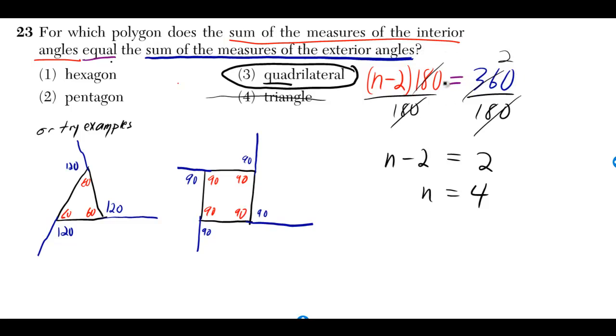And they want to know what kind of polygon we have when these sums are equal. We can solve this equation for the number of sides, and that tells us what kind of polygon we have.